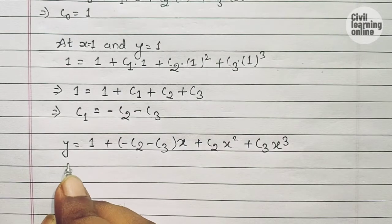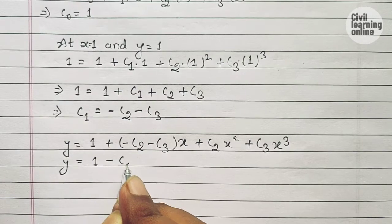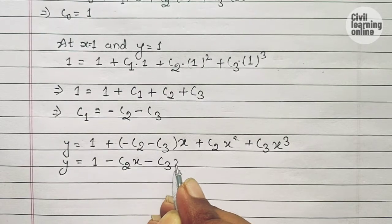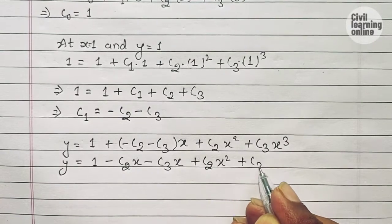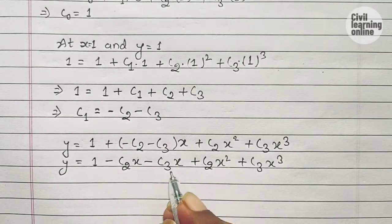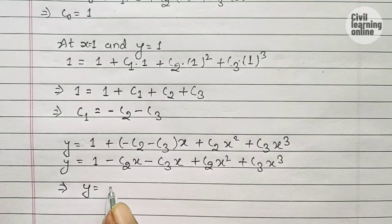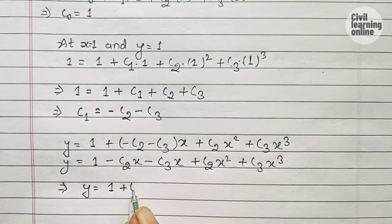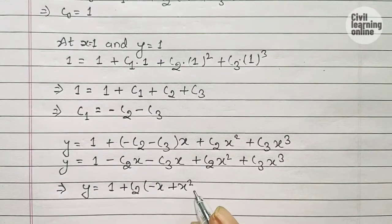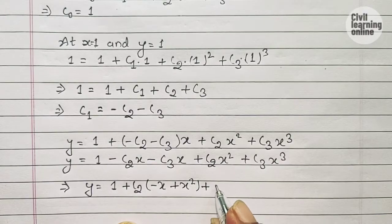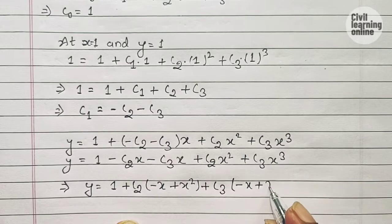On multiplying out: y = 1 - c₂x - c₃x + c₂x² + c₃x³. Taking c₂ common and c₃ common gives: y = 1 + c₂(-x + x²) + c₃(-x + x³). Let this be equation 2.